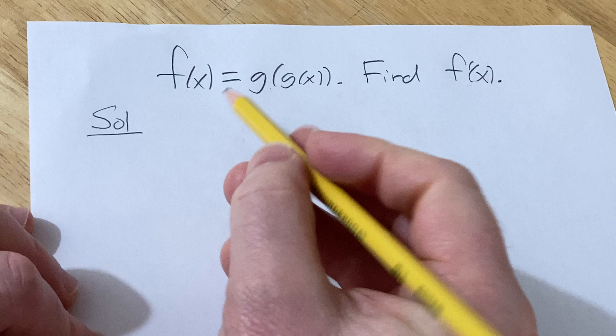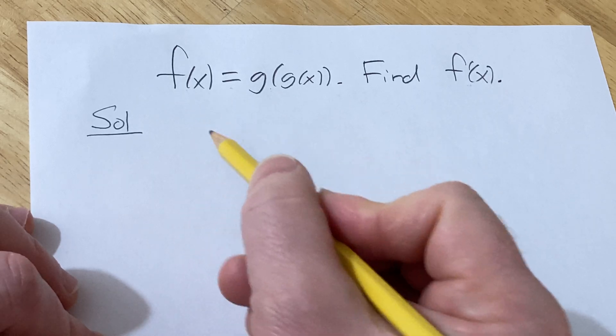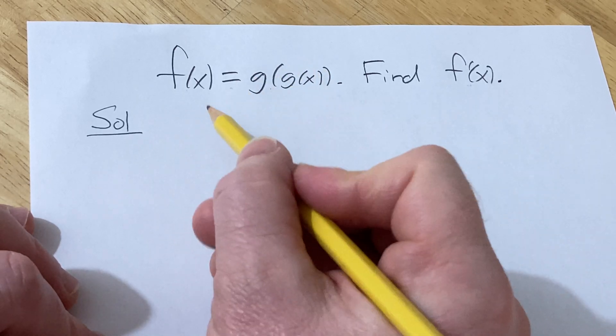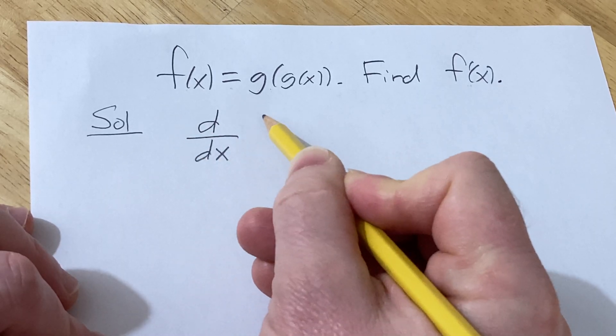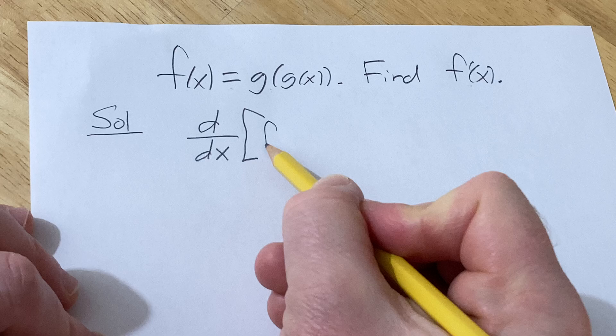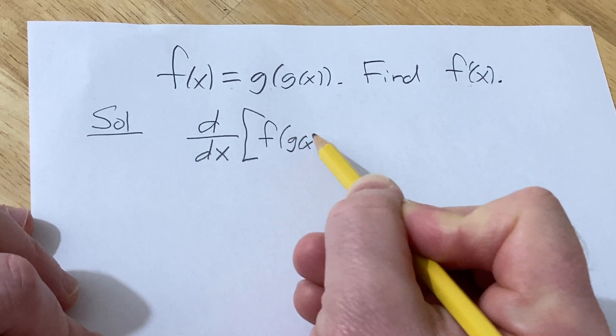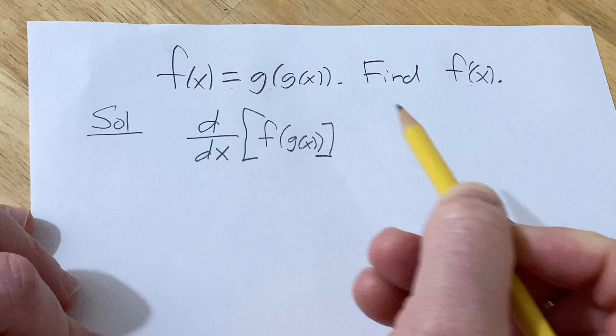Solution. We're going to start by recalling a very powerful formula known as the chain rule. The chain rule says if you take the derivative with respect to x of the composition f of g of x, there is a formula.